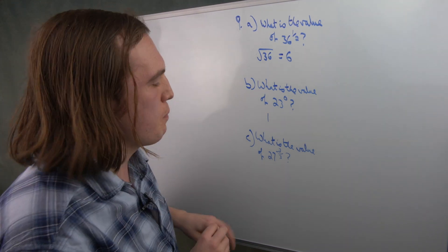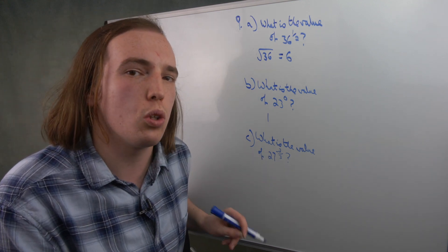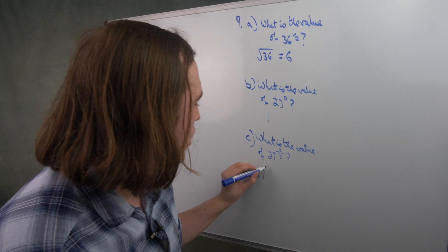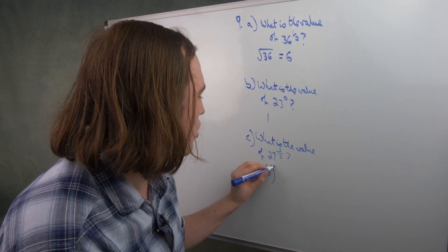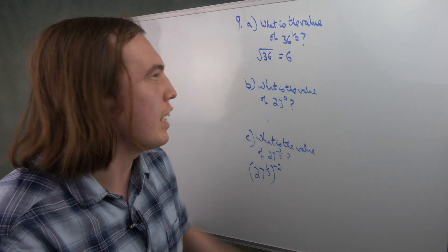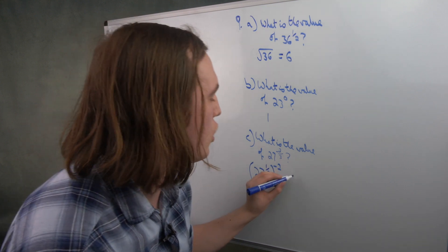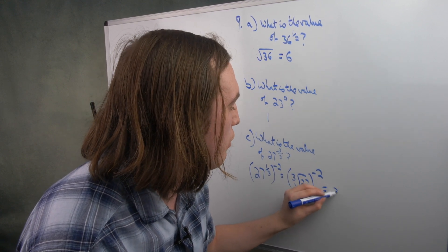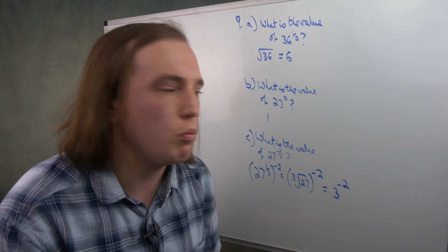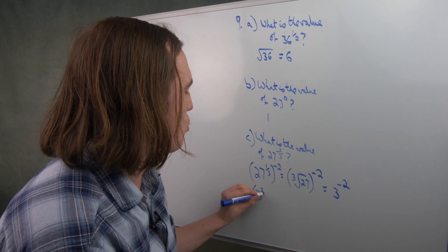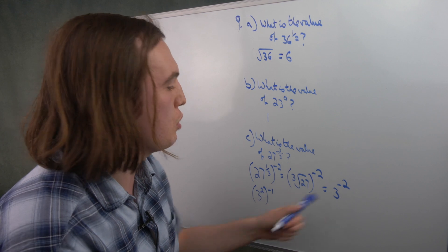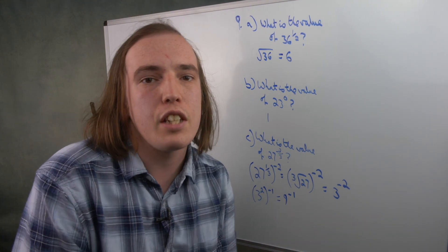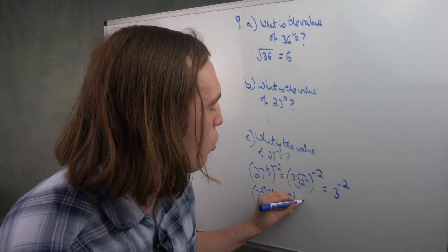Lastly, the more complicated one: what is the value of 27 to the power of minus 2 over 3? We can split this as 27 to the power of 1/3, all to the power of minus 2. As stated, to the power of a third is like the cube root. The cube root of 27 is 3, to the power of minus 2. We can split that as 3 squared to the power of minus 1, because minus 1 times 2 is minus 2. 3 squared is 9. A negative power means take the reciprocal — 1 over that number — so the answer is 1 over 9.